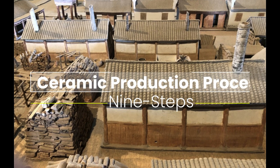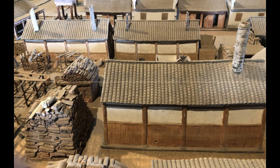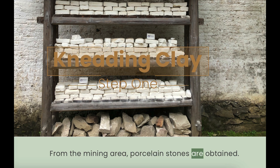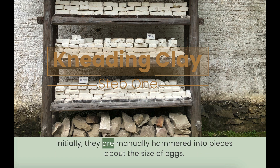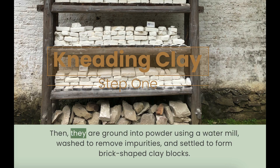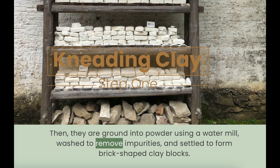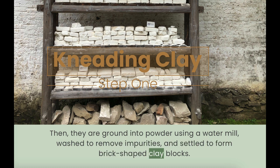9 Steps of Ceramic Production Process. Step 1: Kneading Clay. From the mining area, porcelain stones are obtained. Initially, they are manually hammered into pieces about the size of eggs. Then, they are ground into powder using a water mill, washed to remove impurities, and settled to form brick-shaped clay blocks.